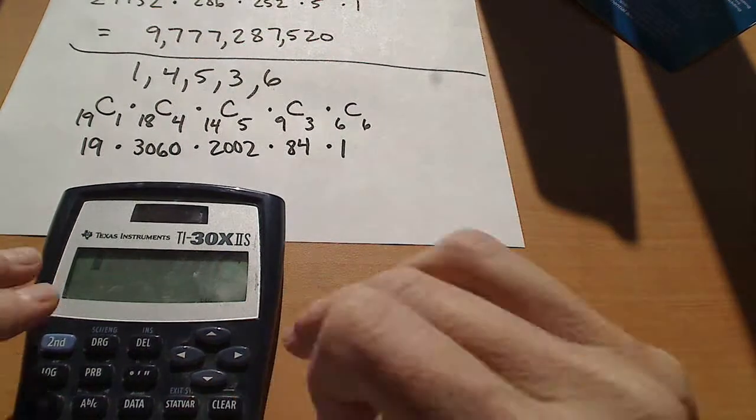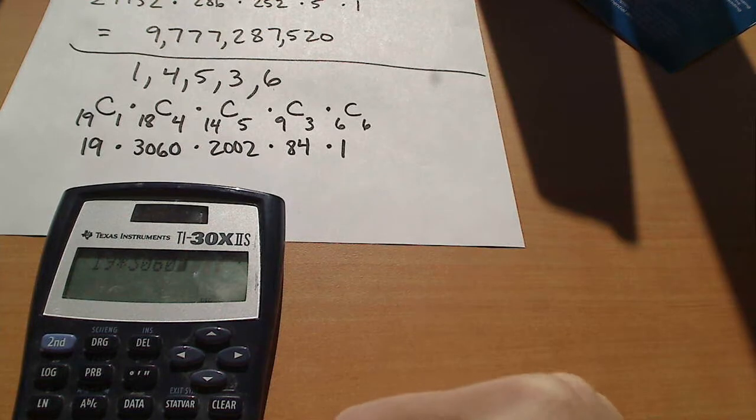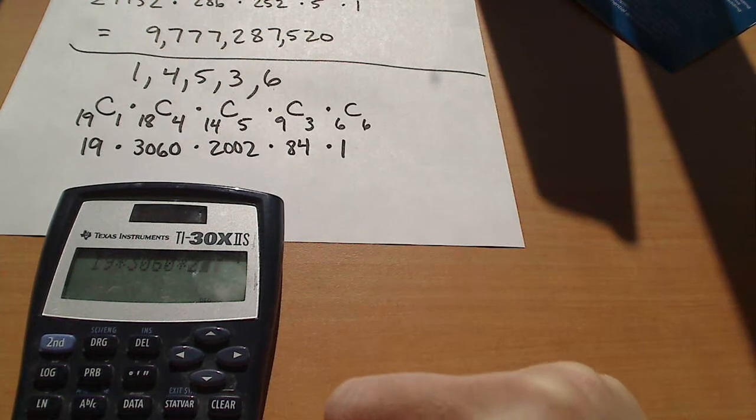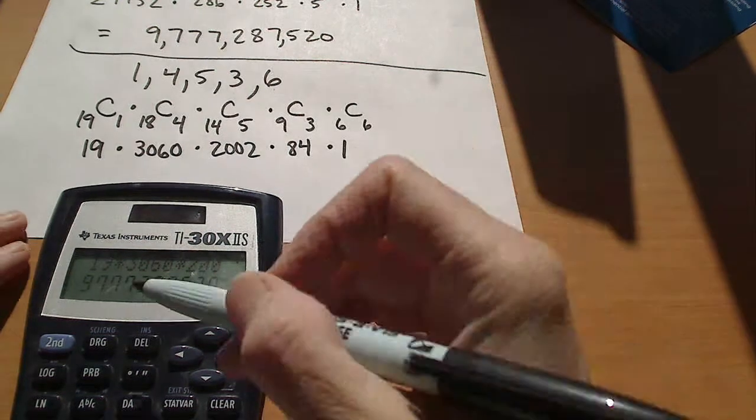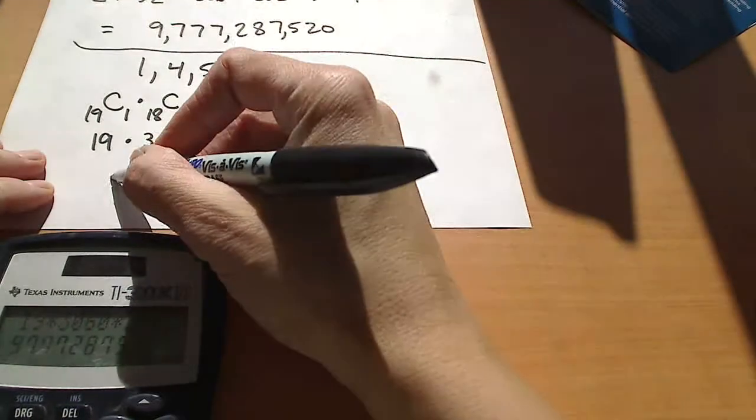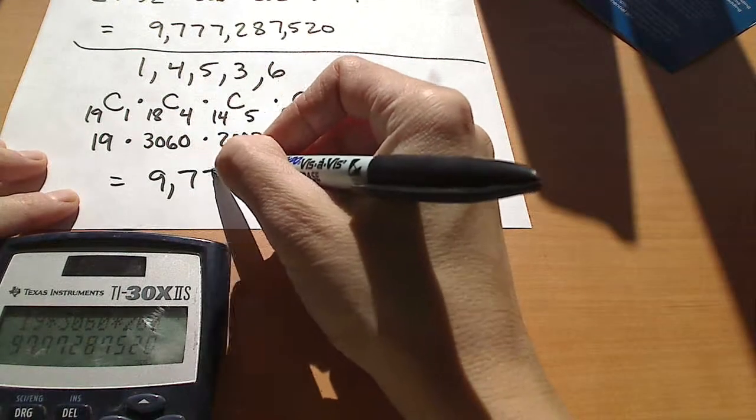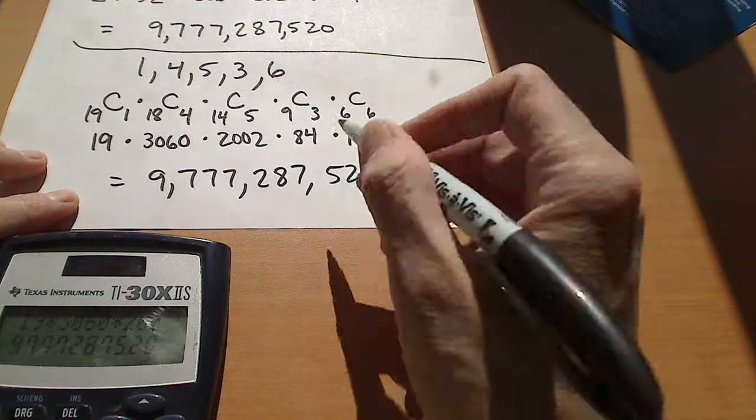Alright, so let's multiply these together. So we've got 19 times 3060 times 2,002 times 84. And we end up getting the same really huge number there.